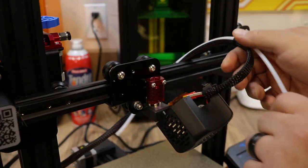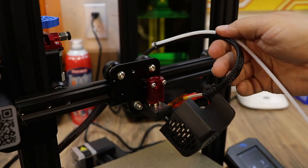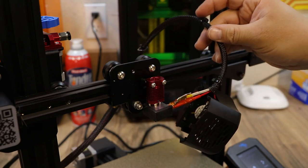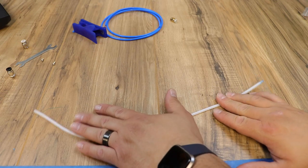With the Bowden tube out of the hot end I like to just pull my tube back through the included zip ties that are in here so you don't have to cut those yet. Now we work on getting a new piece of tubing for your printer.